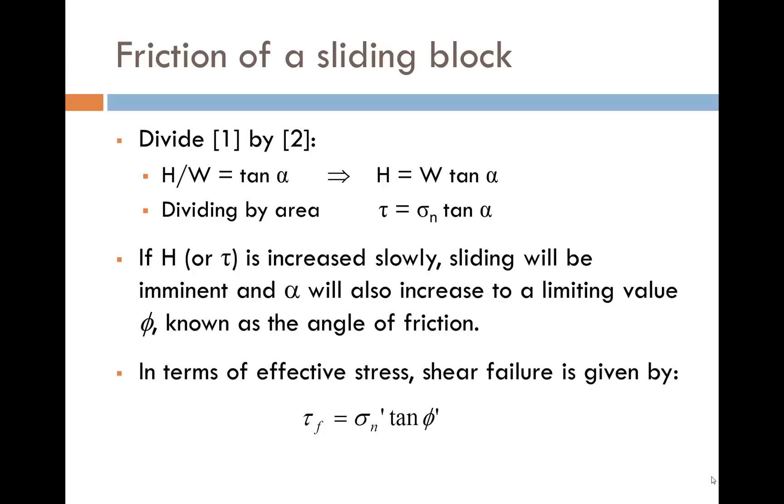Dividing across by the contact area A we get that tau is equal to sigma n times tan alpha. If H or tau is increased slowly, sliding will be imminent and alpha will increase to a limiting value phi known as the angle of friction. In terms of effective stresses, shear failure is given by tau subscript f is equal to sigma n dash times tan phi dash.